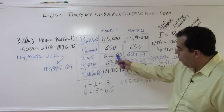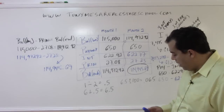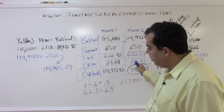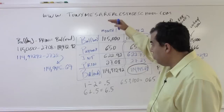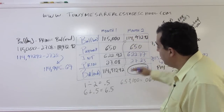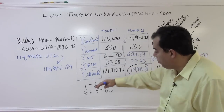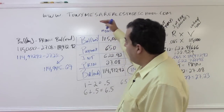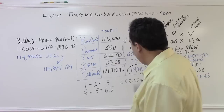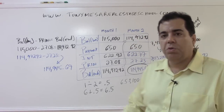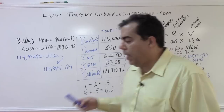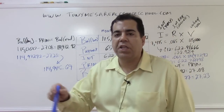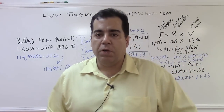Notice that from month one to month two, the interest component went down slightly — every month you pay a little less interest — and the principal went up from $27.08 to $27.23. If you don't see that pattern, you've made a mistake. At the beginning it's mostly interest; every month principal increases a little. Finally, remember to circle what you're looking for — don't do all the math correctly and then pick the wrong answer choice on the state exam.